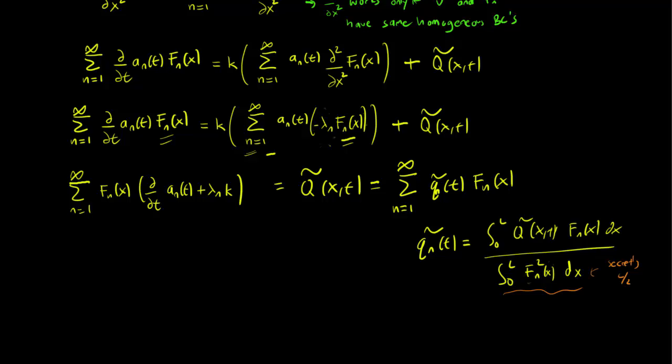But then we can compare the Fourier coefficients on the left hand side with the Fourier coefficients on the right. And they have to be equal, which implies da_n/dt plus lambda_n*K*a_n(t) equals this q tilde_n(t) term, which we already know what it is.